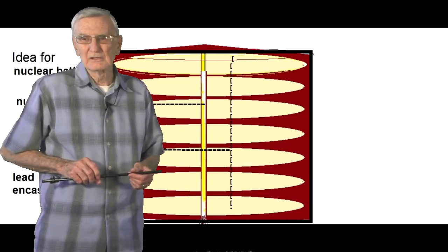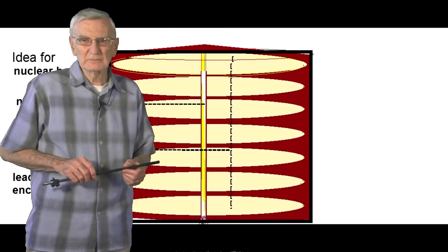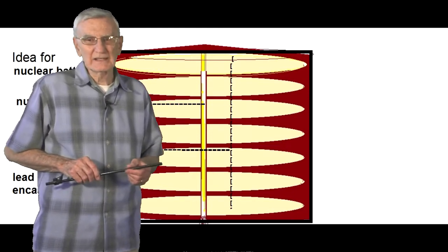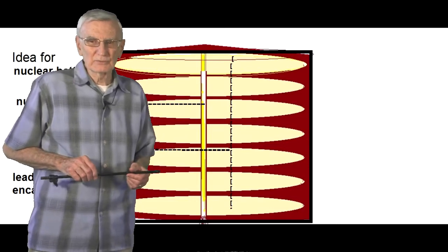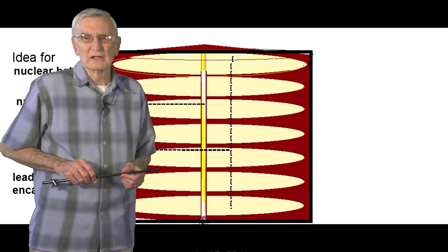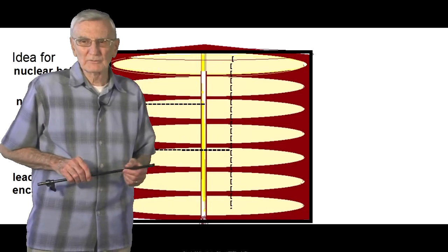Thinking back to the 1950s, wristwatches at that time used radium on the numbers and hands and they would glow brightly in the dark. There were issues with radiation; they were discontinued. Couldn't it be created, a nuclear light in some small, maybe 12 by 12 inch lead shield container?